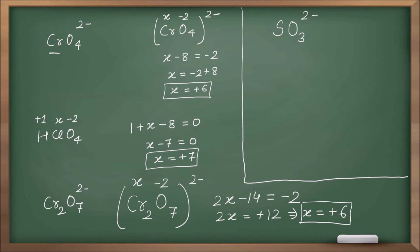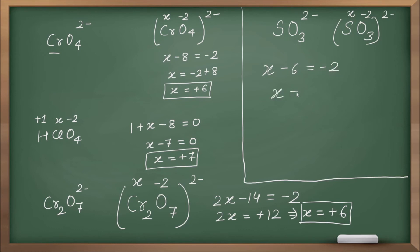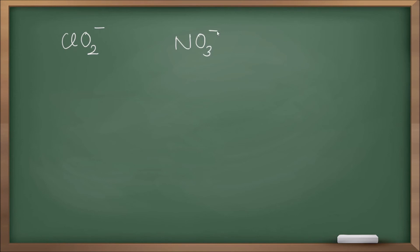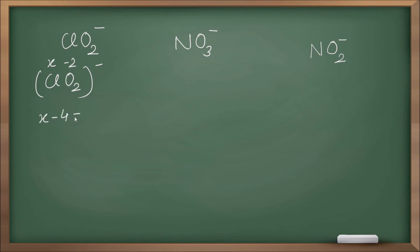Example: SO3²⁻ — let sulfur = x, oxygen = minus two. So: x + 3(−2) = −2, x − 6 = −2, x = plus four. For ClO2⁻: let chlorine = x. So: x + 2(−2) = −1, x − 4 = −1, x = plus three.